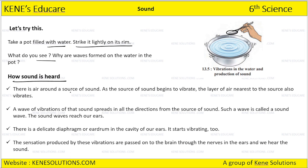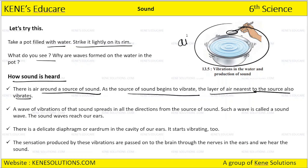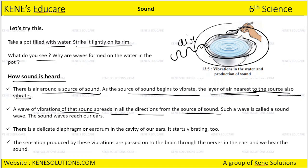There is air around a source of sound. As the source of sound begins to vibrate, the layer of air nearest to the source also vibrates. Whenever a sound is created by the source, the particles of air around it also start vibrating. A wave of vibration spreads in all directions from the source of sound, and such a wave is called a sound wave.